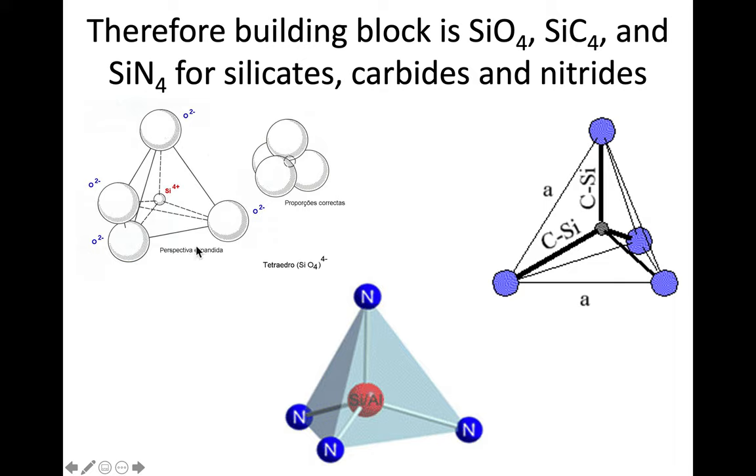We can also have other tetrahedra of silicon with carbon or nitrogen. Silicon carbide is based off this tetrahedron. So the building block is SiO₄, SiC₄, and SiN₄ for silicates, carbides, and nitrides. We're going to focus on silicates, but the underlying effects apply to other structures like carbides and nitrides.